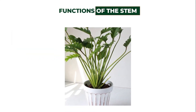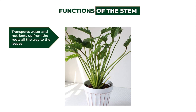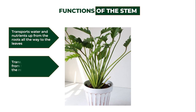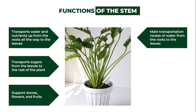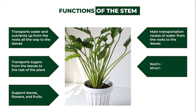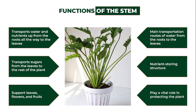Now let's look at the functions of the stem. The stem possesses a lot of functions: one, they transport water and nutrients up from the roots all the way to the leaves; two, they transport sugars from the leaves to the rest of the plant; three, they provide support to the leaves, flowers, and fruits; four, they are the main route of water transportation from roots to leaves; and lastly, they play a vital role in protecting the plant.